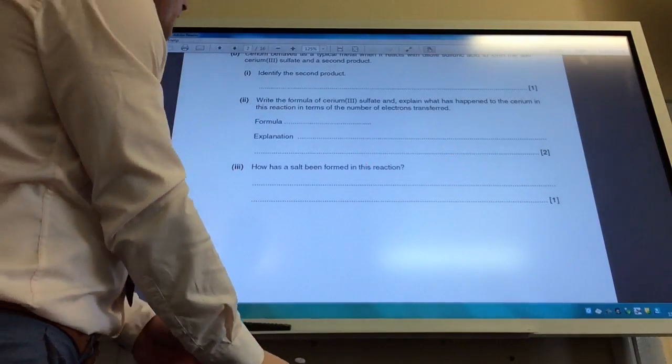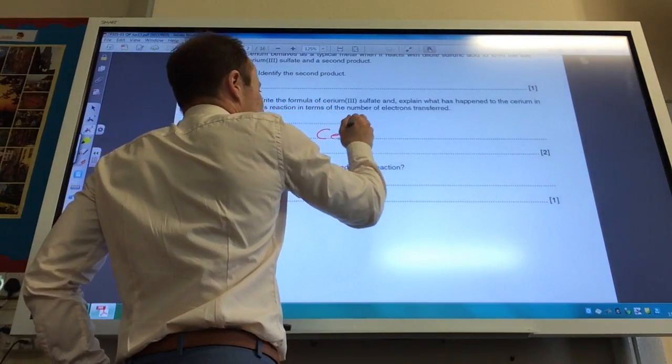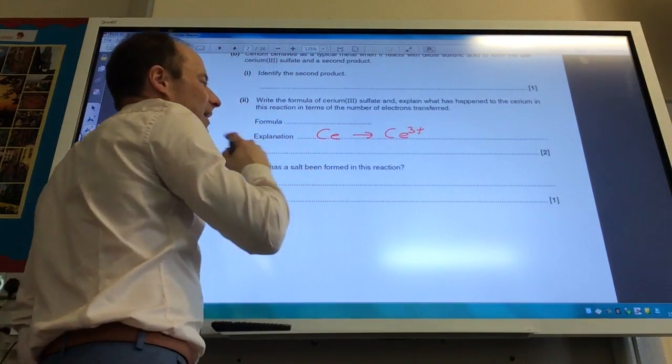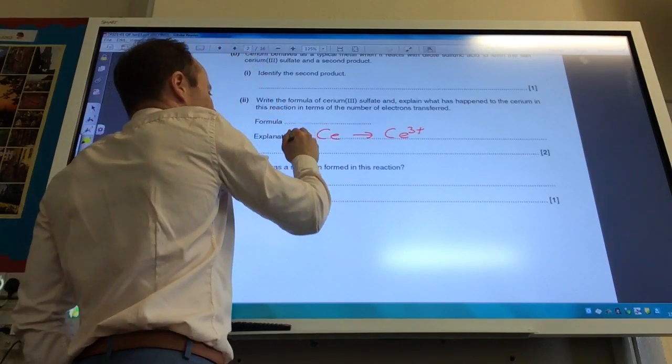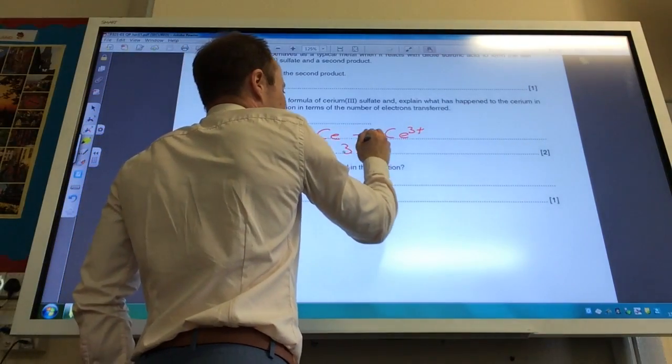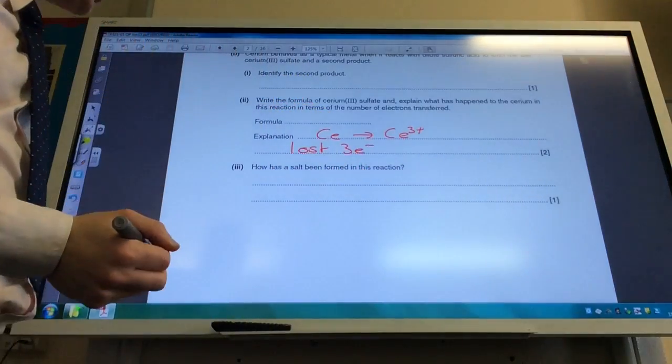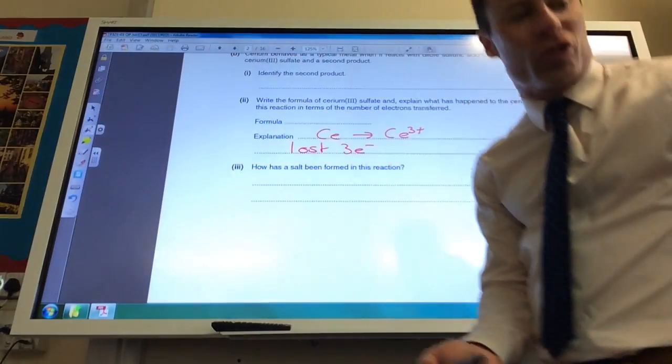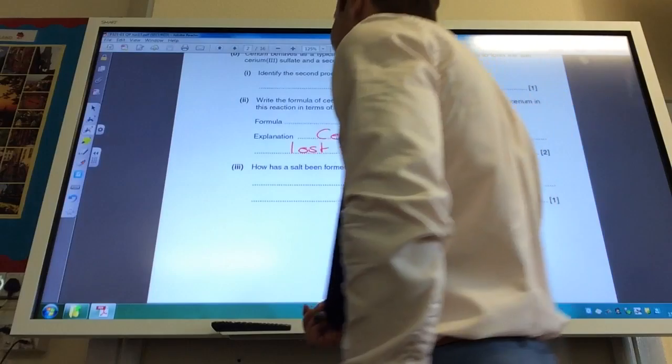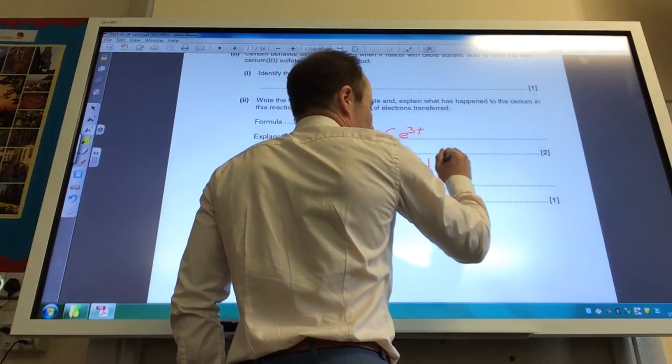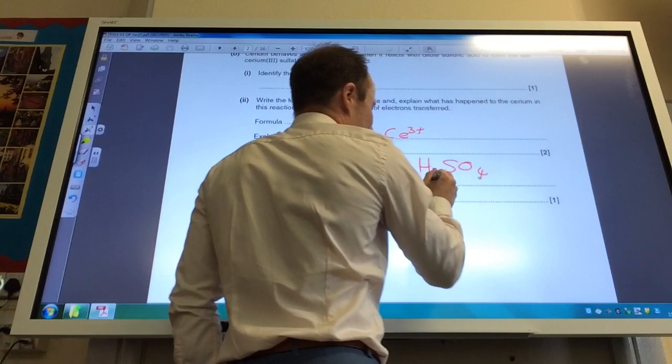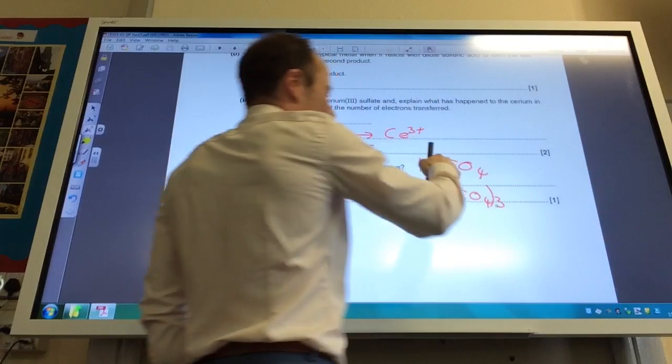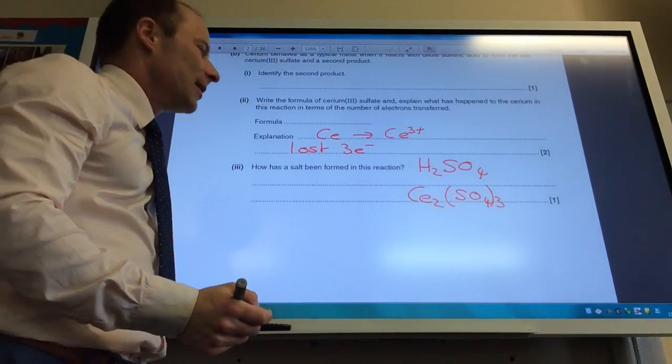I'm now going to explain what's happened to cerium. It started off as Ce and it became Ce3+ during the reaction, and therefore it has lost three electrons. How has a salt been formed in this reaction? It's the definition of a salt: the hydrogen ion has been replaced by a metal ion. You started off with sulfuric acid and you've made Ce2(SO4)3, so the hydrogen ion has been replaced by cerium ion.